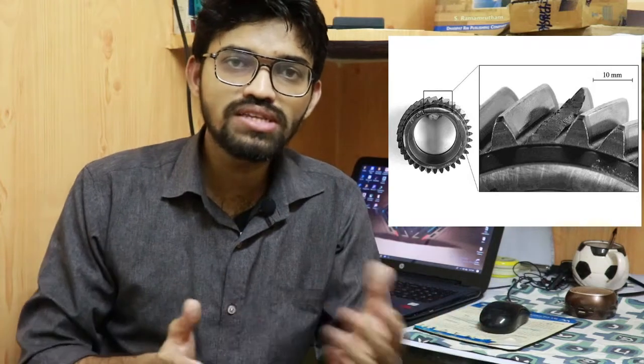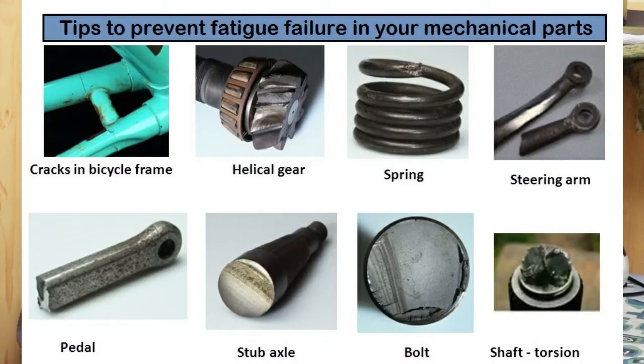Fatigue failure occurs in many real-world scenarios. You can see it in gearing assemblies where two gears mesh with each other in a machine. You can also see this type of failure in turbines and IC engines. These are common examples of where fatigue failure is observed.